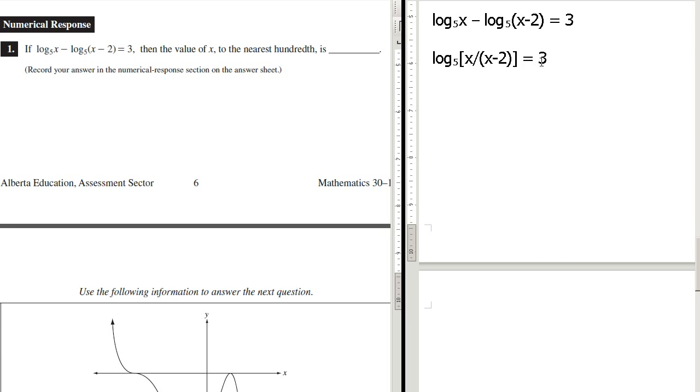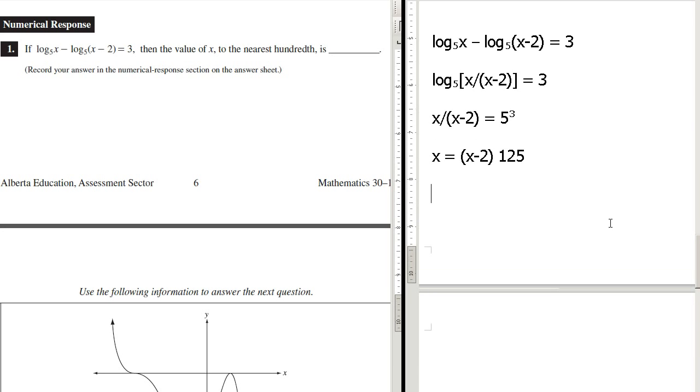And now to get rid of this log, we raise each side as an exponent with base 5. So that's going to get rid of the log on this side, and we'll simply have this. And then on this side we'll have 5 to the power of 3. So here I'm going to do two steps in one. I'm going to say x is equal to... Multiply both sides by (x minus 2). So we have (x minus 2) times... So now we have to do some algebra.